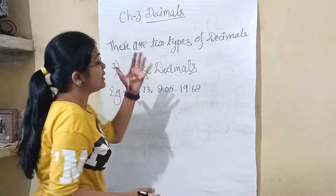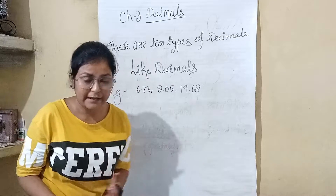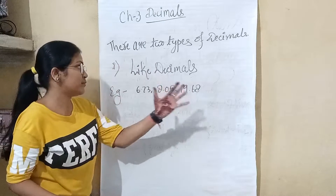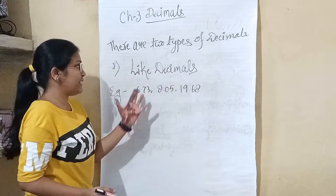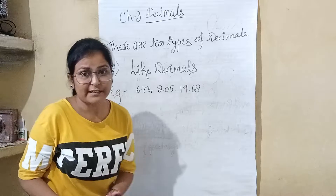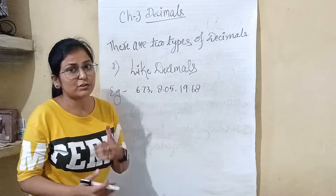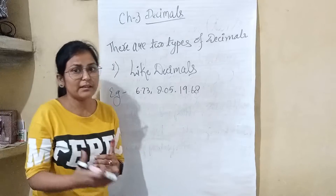There are two types of decimals. The first one is like decimals and the second one is unlike decimals, which we will explain on the next point.